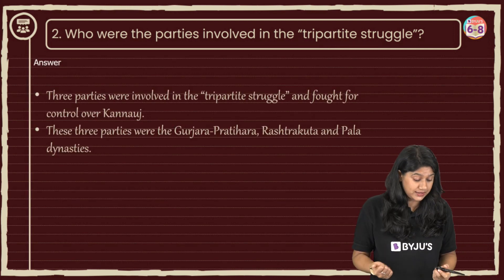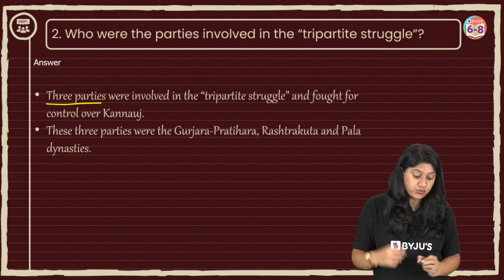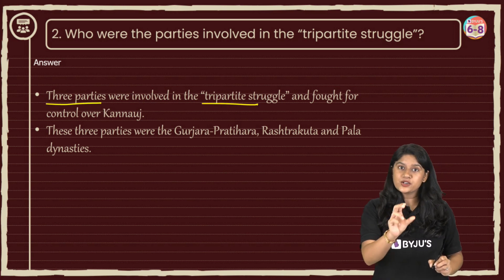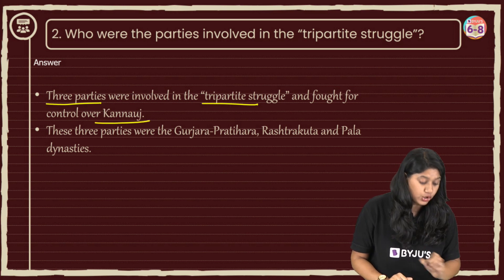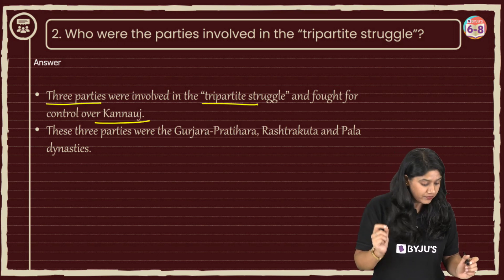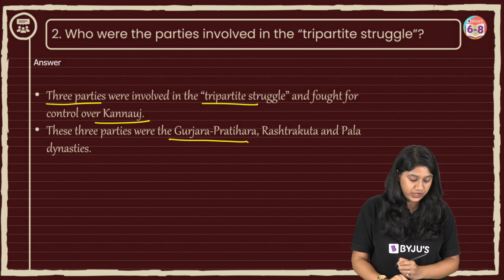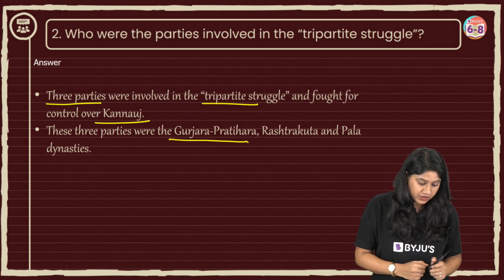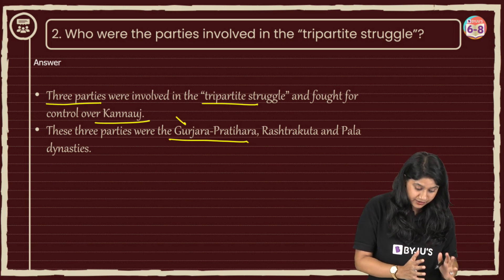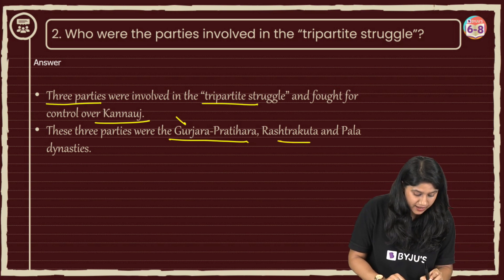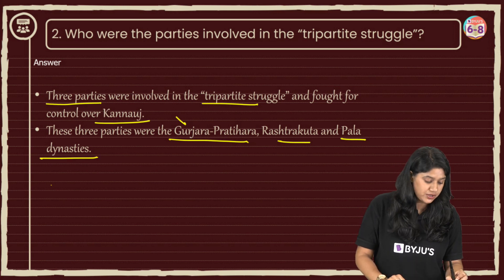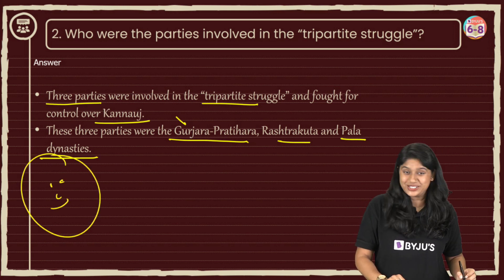We can write our answer by stating that three parties were involved in the struggle, fighting over the place of Kannauj. This is very important to mention in the answer. The three parties are: the Gurjara-Pratiharas, the Rashtrakutas, and the Palas. That's question number two and we are done with it.